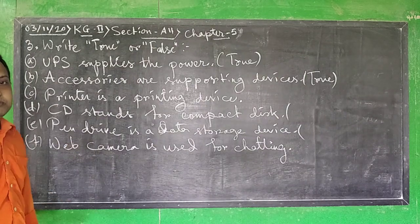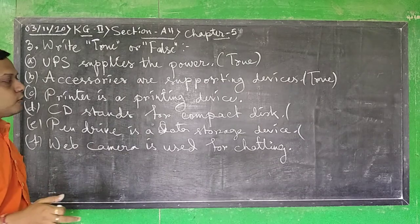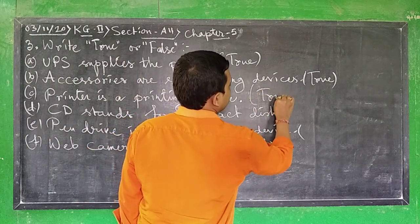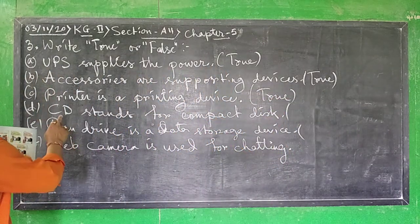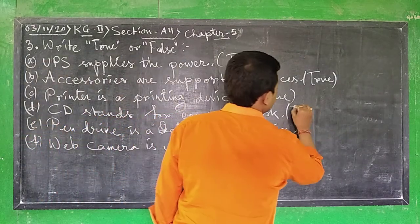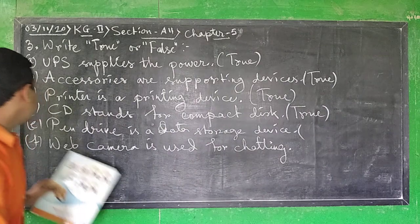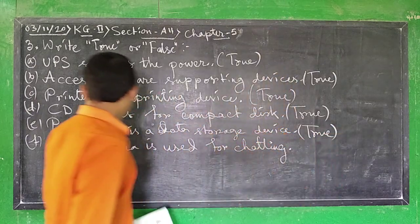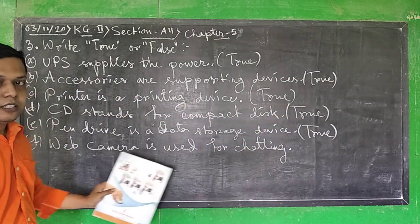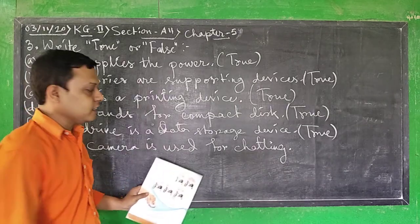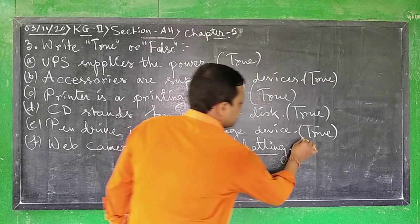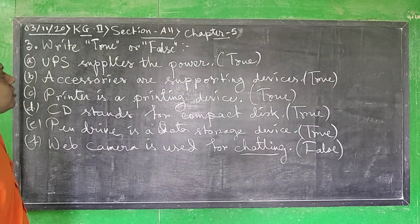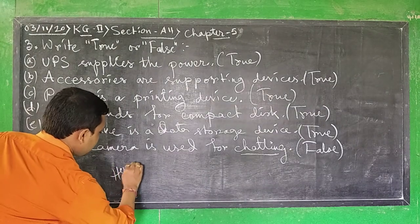Number 2 is a false sentence. Number 8: Web camera is used for chatting — web camera is actually used for video chatting, but since it says only chatting here, it will be a false sentence. This is our today's class.